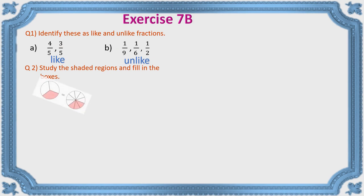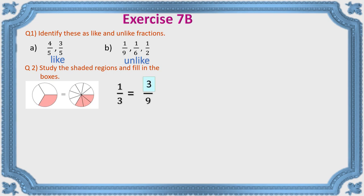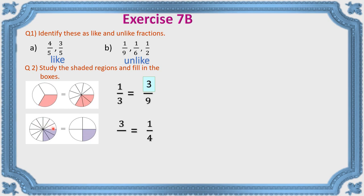Study the shaded regions and fill in the boxes. For the first question, both shaded regions are equal — these are equivalent fractions. One-third is already given; the second figure has nine parts with three shaded, so one-third equals three-ninths. Next, three-dash equals one-fourth. Three parts are shaded; counting the total parts gives twelve. So the missing number is twelve, and three-twelfths equals one-fourth — these are equivalent fractions.